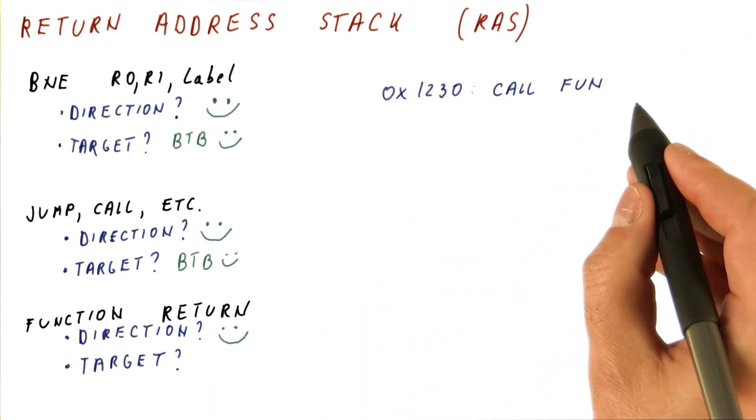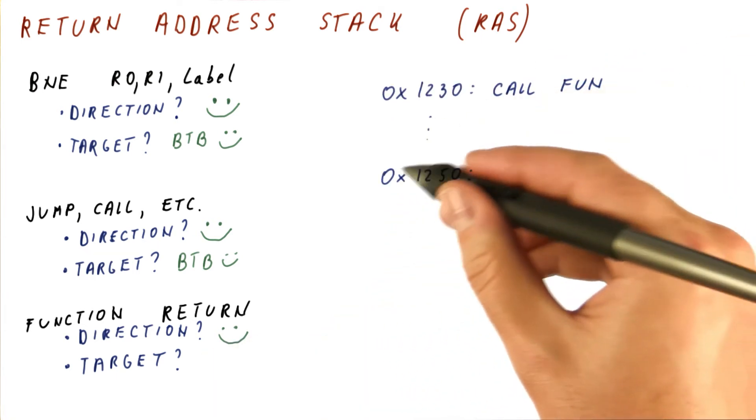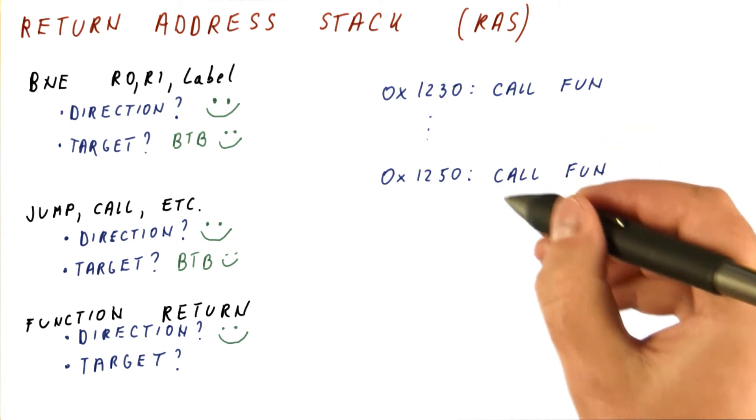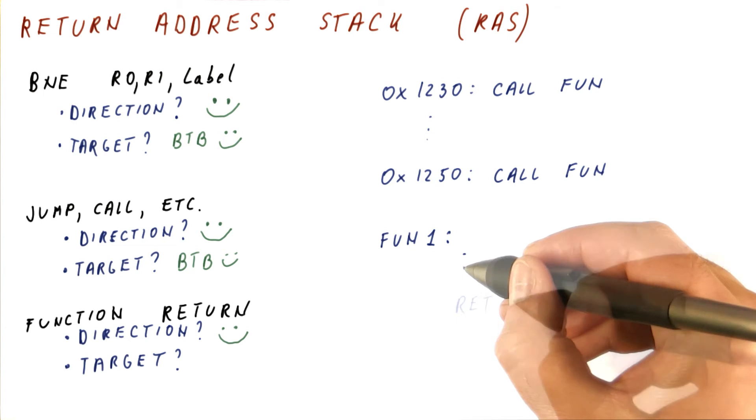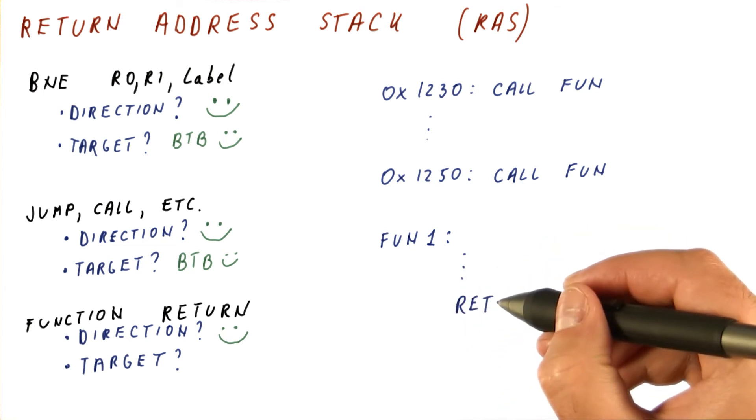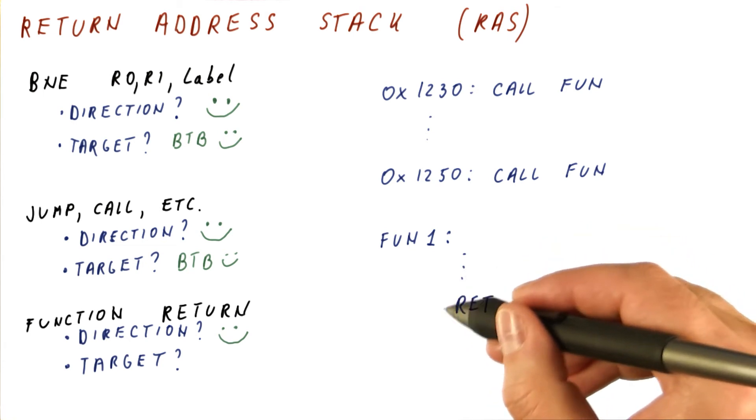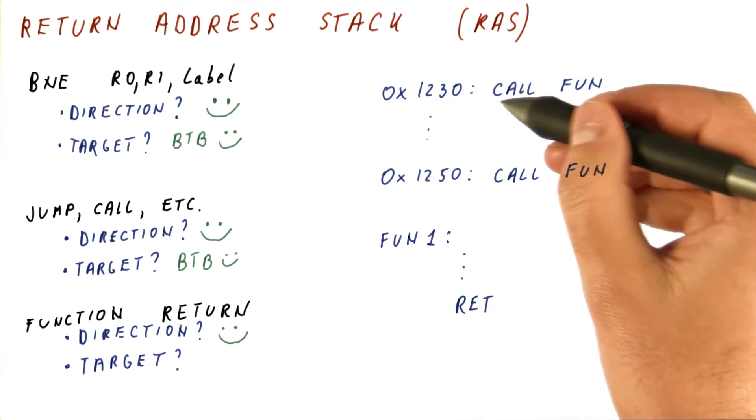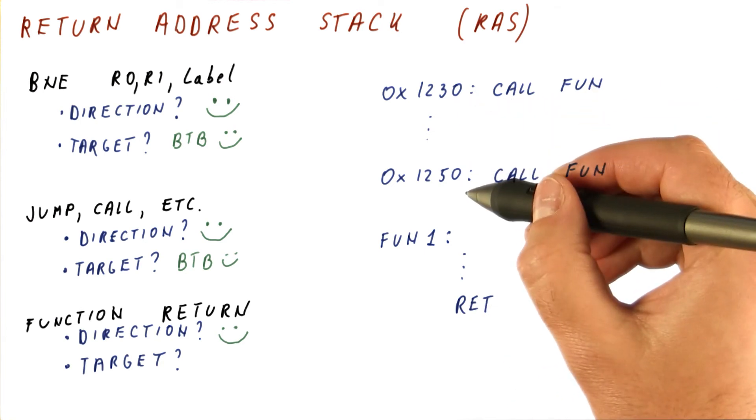Something like this. We have an instruction that can call this function. Somewhere else in the program, we have another instruction that can call the same function. This function has a return instruction. And now the problem is that this return instruction should either jump here or here, depending on where it was called from.